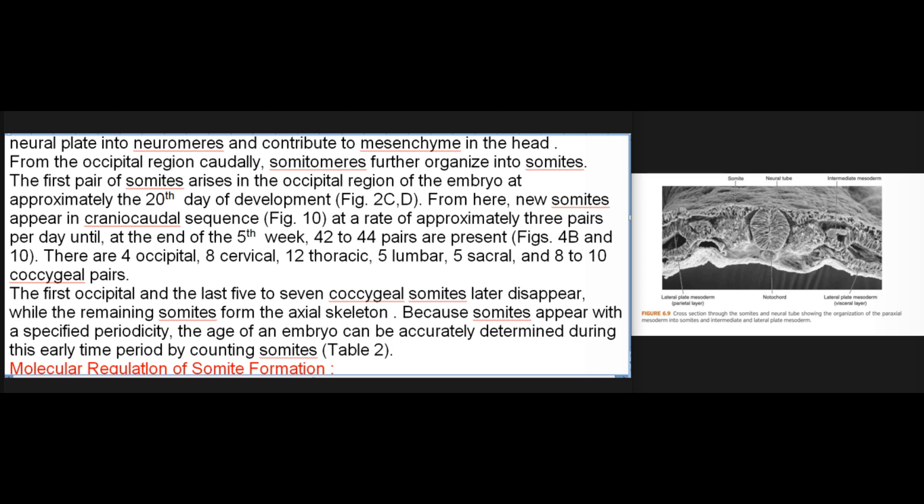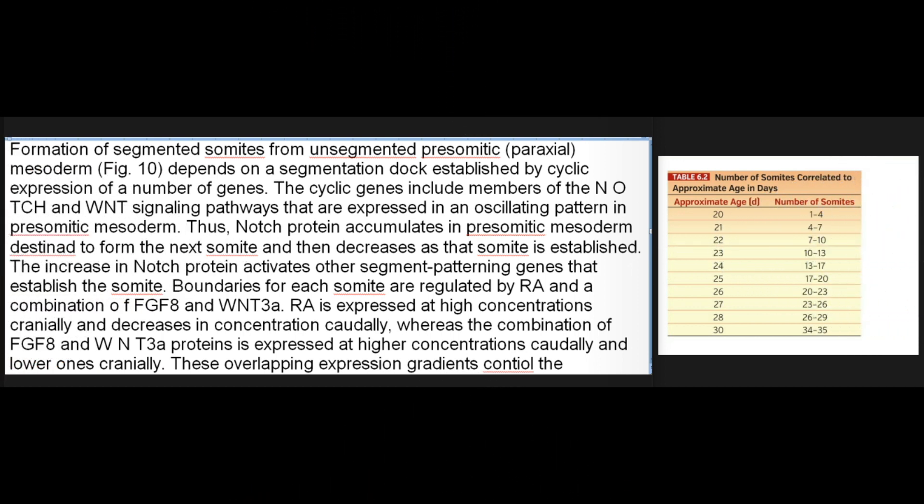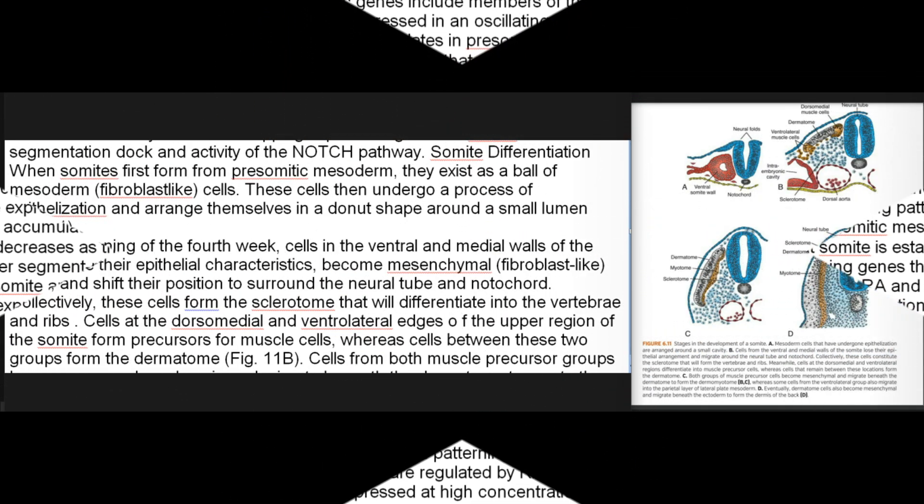Molecular regulation of somite formation: Formation of segmented somites from unsegmented presomitic (paraxial) mesoderm depends on a segmentation clock established by cyclic expression of a number of genes. The cyclic genes include members of the NOTCH and WNT signaling pathways that are expressed in an oscillating pattern in presomitic mesoderm. Notch protein accumulates in presomitic mesoderm destined to form the next somite and then decreases as that somite is established. The increase in notch protein activates other segment patterning genes that establish the somite. Boundaries for each somite are regulated by retinoic acid (RA) and a combination of FGF8 and WNT3A. RA is expressed at high concentrations cranially and decreases caudally, whereas FGF8 and WNT3A are expressed at higher concentrations caudally and lower ones cranially. These overlapping expression gradients contain the segmentation clock and activity of the NOTCH pathway.